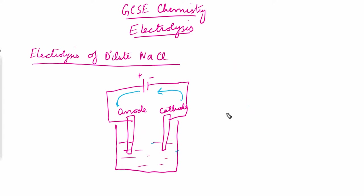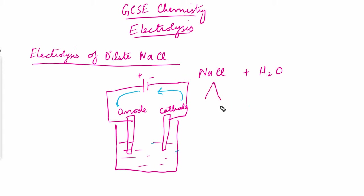Next we discuss the electrolysis of dilute NaCl. Dilute NaCl is sodium chloride mixed with water. In this electrolytic solution we will not only have sodium and chloride ions — we will also have hydrogen ions (H⁺) and hydroxide ions (OH⁻). So the total ions in the electrolyte are: sodium ion, chloride ion, hydrogen ion, and hydroxide ion.